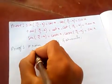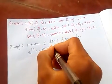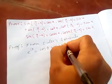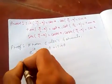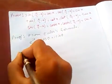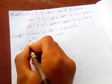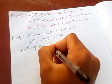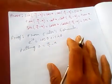Euler's formula states that e^(iθ) = cos θ + i sin θ. We will put θ equal to π/2 minus x.